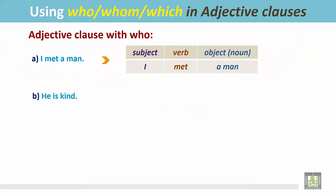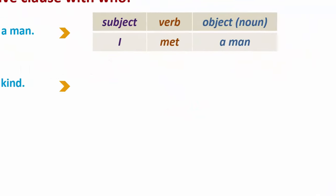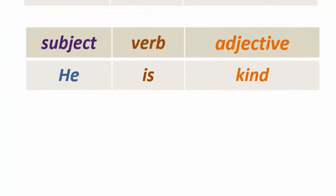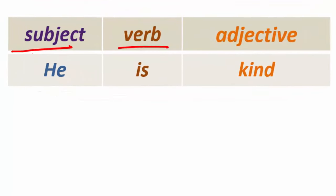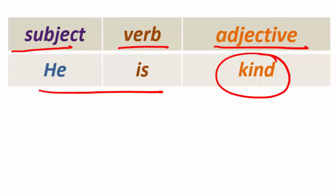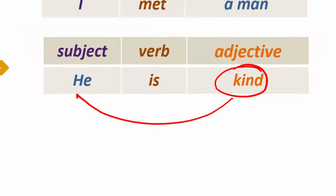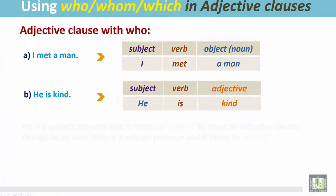'He is kind.' In this sentence, the structure is: subject, verb, and adjective. 'He is kind' — 'kind' is an adjective, and this adjective is modifying the subject 'he.'